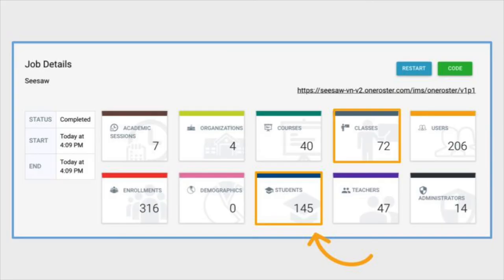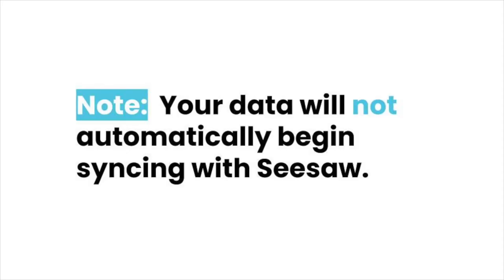To make sure everything is correct, check that the number of students matches your Seesaw for Schools subscription purchase and that only the correct classes have been shared. Your data will not automatically begin syncing with Seesaw, so take the time to make any edits you need to your data in ClassLink.